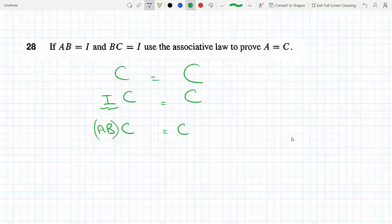I can regroup this as A times BC, and this equals C.